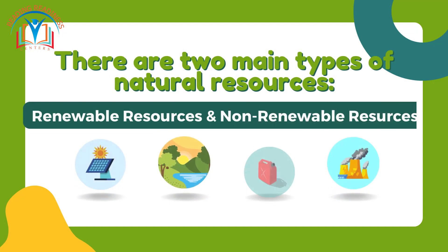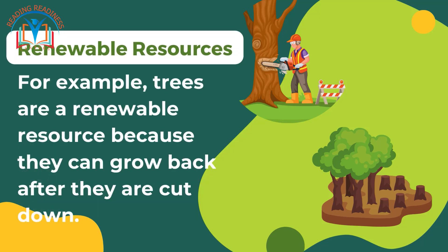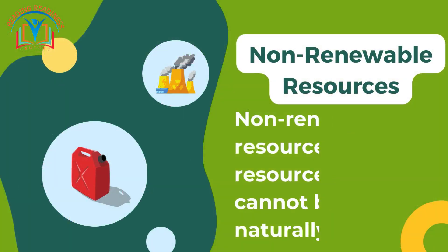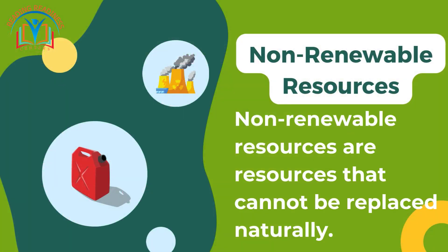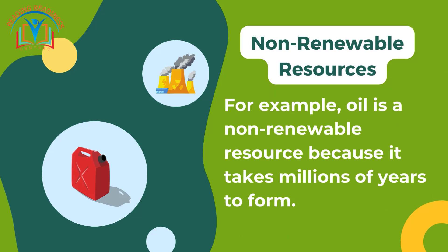There are two main types of natural resources: renewable and non-renewable. Renewable resources can be replaced naturally — for example, trees are renewable because they can grow back after being cut down. Non-renewable resources cannot be replaced naturally — for example, oil is non-renewable because it takes millions of years to form.